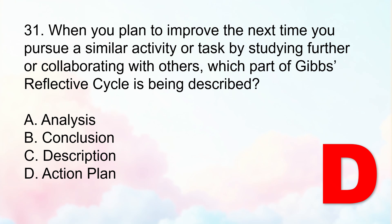For Letter A, analysis: this one focuses on understanding why things happened, not what you'll do next time. For Letter B, conclusion: this summarizes what was learned and what could have been done differently, but doesn't plan future actions. For Letter C, description: this involves recounting what happened and is not about what to do next. So only Letter D is the best answer.